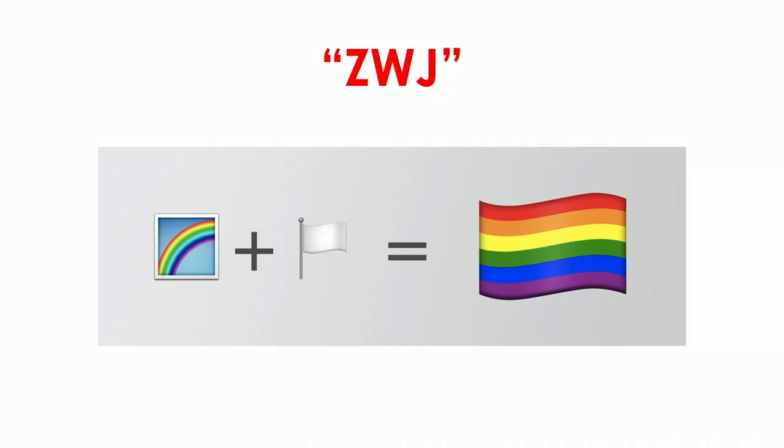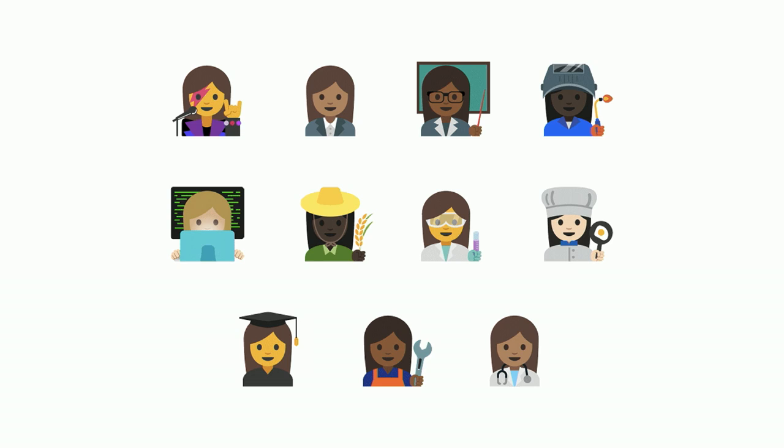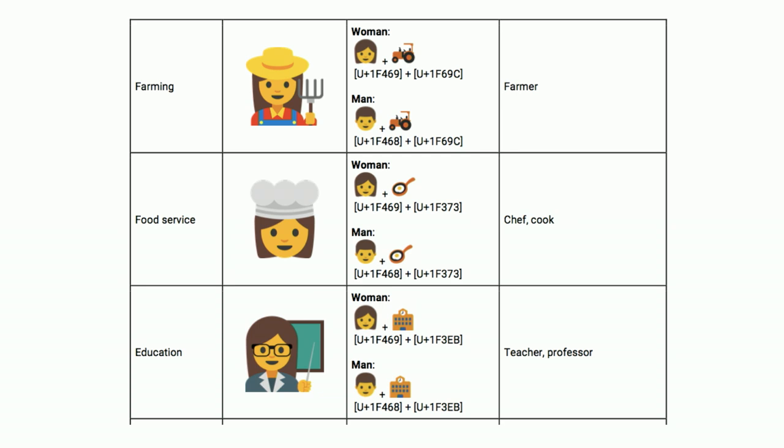You put a flag and a rainbow together and you get a rainbow flag. A lot of the occupations are almost always a female or male character plus something after it — so the astronaut is a woman plus a spaceship, and the chef is a woman plus a frying egg. Those are created by these ZWJ sequences — farmer, food service, education. The laptop one is really fun; a lot of people use that in their Twitter or Instagram handle.